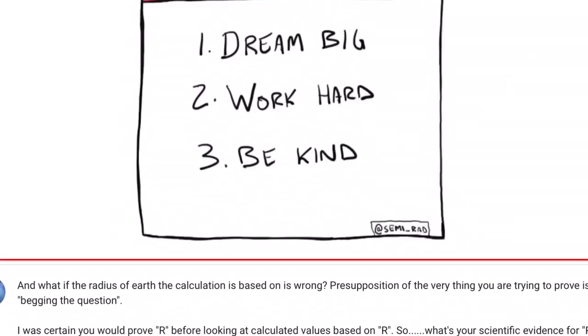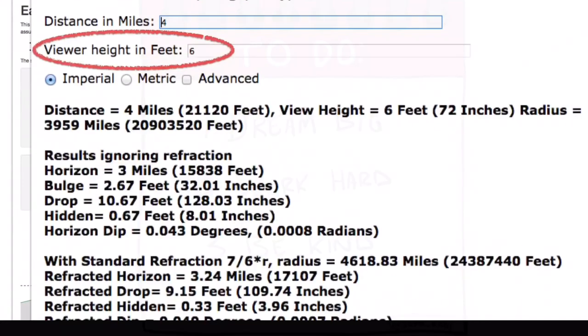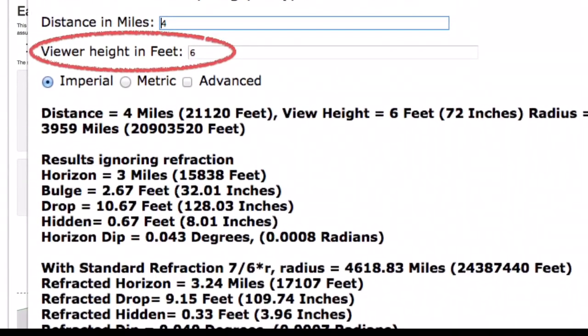In essence, Charles, you start your video by pointing out that the GitHub and Metabunk calculations, according to you, start with eye height.